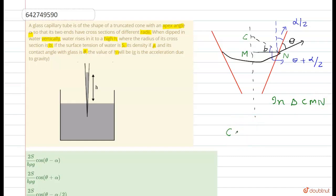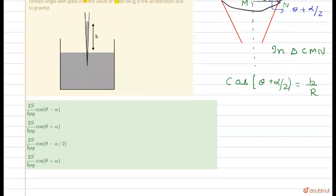cos(theta plus alpha by 2) is equals to base, that is b, divided by hypotenuse, that is r. Base by r, right.